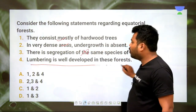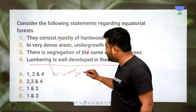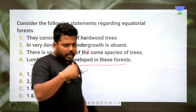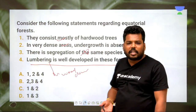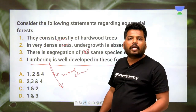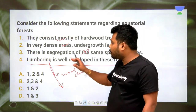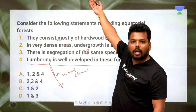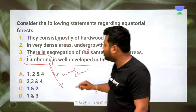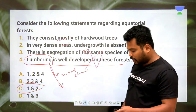Statement 4 about lumbering being common in equatorial regions is wrong. Lumbering — the wood-cutting, processing, and selling process — is prevalent in higher latitudes like British-type or Laurentian-type climates, not near the equatorial region. Hence statements 1 and 2 are correct; 3 and 4 are wrong. The answer is option C.